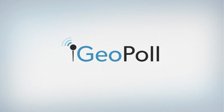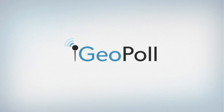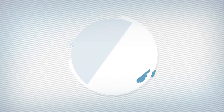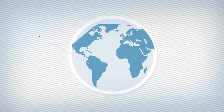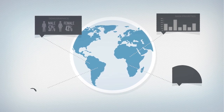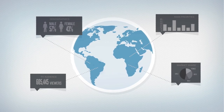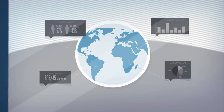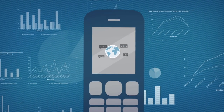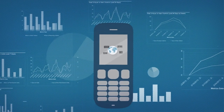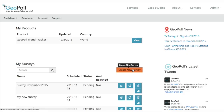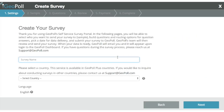GeoPoll is a mobile survey platform that helps businesses and organizations make more effective decisions by providing fast, reliable data from emerging markets. GeoPoll On Demand allows you to build and send a mobile survey to our large database of respondents and get results back within hours.